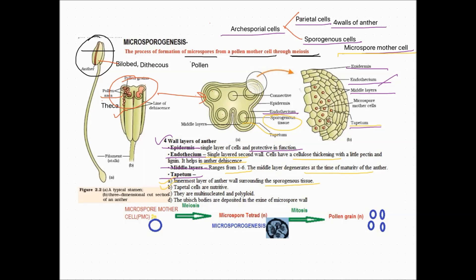Tapetum cells are very important — they are nutritive in nature and provide nutrition to the sporogenous tissue. Tapetum may be binucleated or multinucleated. Ubisch bodies are deposited in the exine of the microspore wall. So the four layers of the anther are: epidermis, endothecium, middle layer, and tapetum — these are very important from an examination point of view.